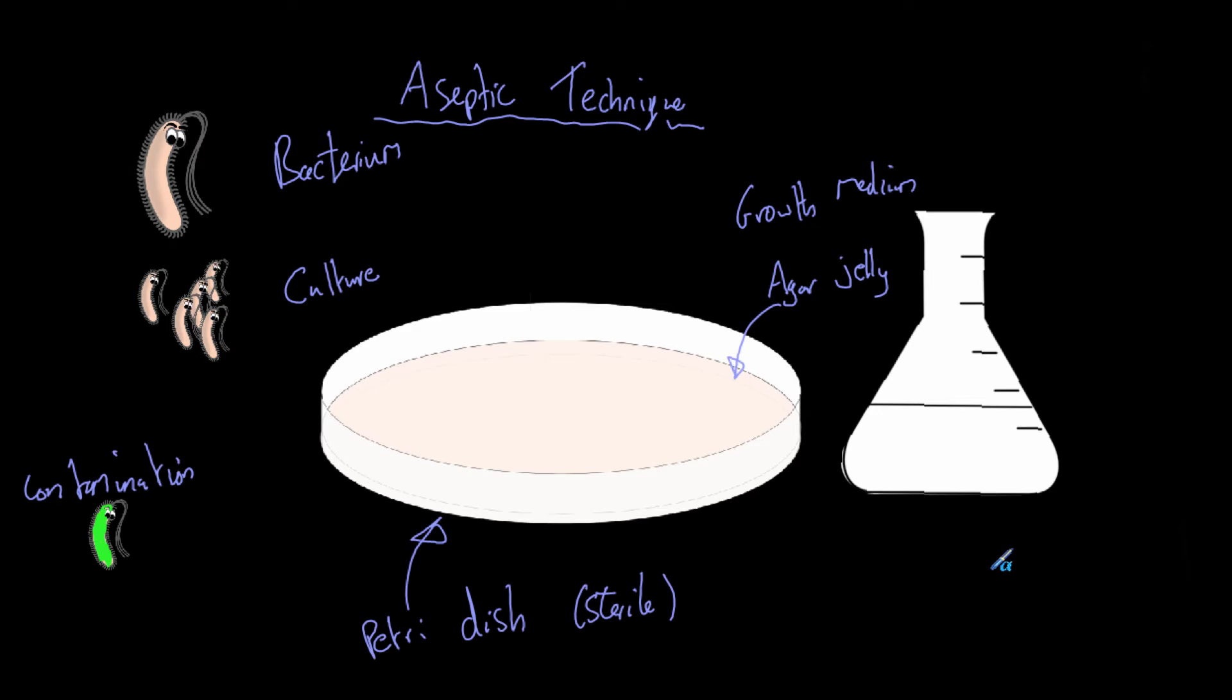And how are we going to get the bacteria onto the agar jelly? We're going to use something which looks like this, and this is known as an inoculating loop. This is used so we put the loop into our bacteria, and then we basically swipe the inoculating loop over the jelly. That transfers the bacteria onto the jelly, and of course we need to sterilize this as well.